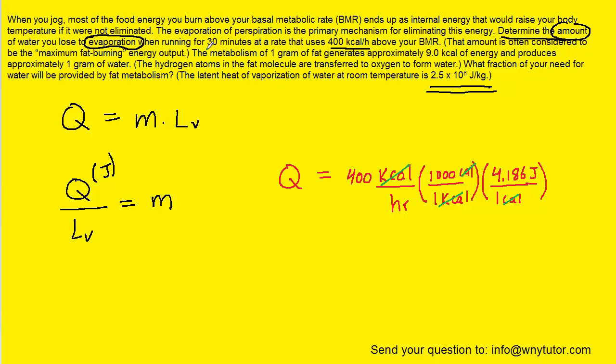Now that leaves us with joules per hour. The question notes that this person is running for 30 minutes, which is half of an hour. So if we simply multiply this setup by half of an hour, we would see that the hours would cancel, and that would leave us with the unit of joules, which is what we're seeking.